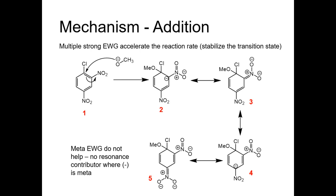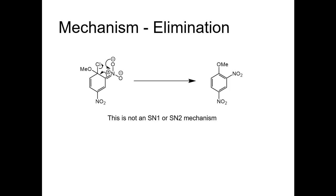This type of reaction takes place when strong electron withdrawing groups are ortho or para to the halide. The more deactivating groups in these positions, the faster the reaction rate. The electron withdrawing group at the ortho or para position stabilizes the negative charge. Structures 3 and 5 are the most stable resonating structures since the negative charge is on the oxygen atom. After the addition reaction, the intermediate undergoes elimination to form the product.